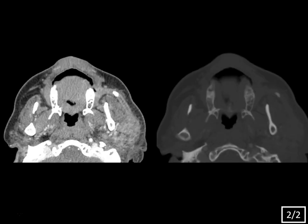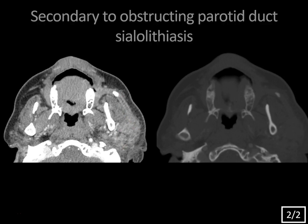These cone-down images show that, indeed, there is a stone here within the parotid duct, also known as Stenson's duct. And upstream of that stone, you see a fluid-filled dilated duct with thickened, inflamed walls, leading to that inflamed parotid gland. So this is left parotid sialadenitis secondary to an obstructing parotid duct stone, or sialolithiasis.